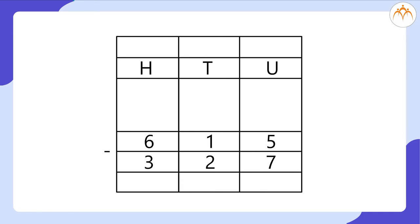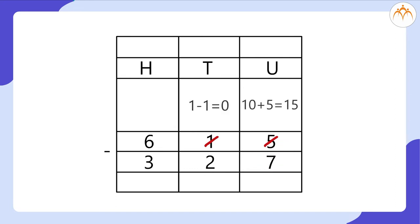Let us subtract 615 from 327. You cannot subtract 7 from 5, so borrow 1 from the tens place — that is borrow 10. Now you have 15 minus 7. You then subtract 1 from the tens place as you have borrowed 1 from it.